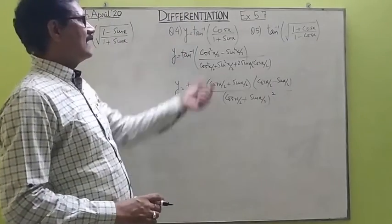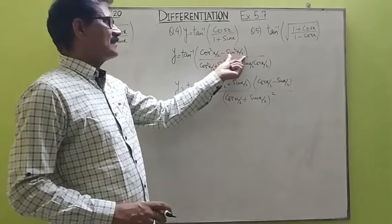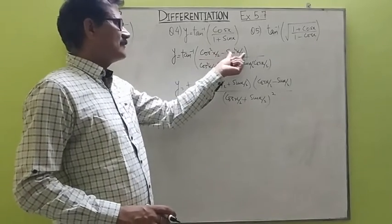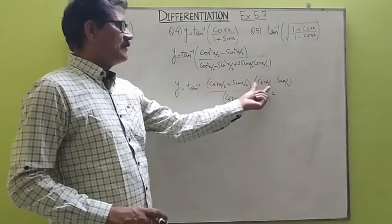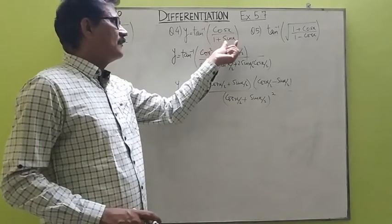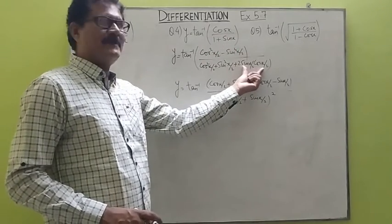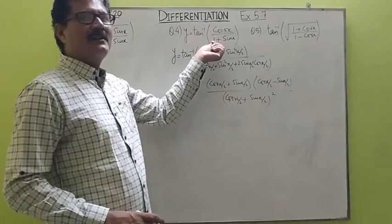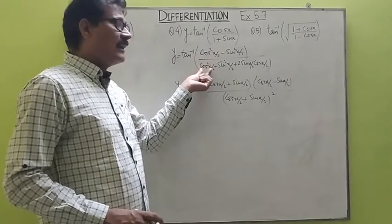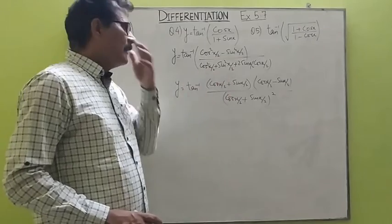What we have done is written the half-angle formula for cos x as cos squared x/2 minus sin squared x/2, which becomes (a+b)(a-b). And for 1 plus sin x, we used the identity cos squared x/2 plus sin squared x/2 plus 2 sin(x/2) cos(x/2), using half angles.